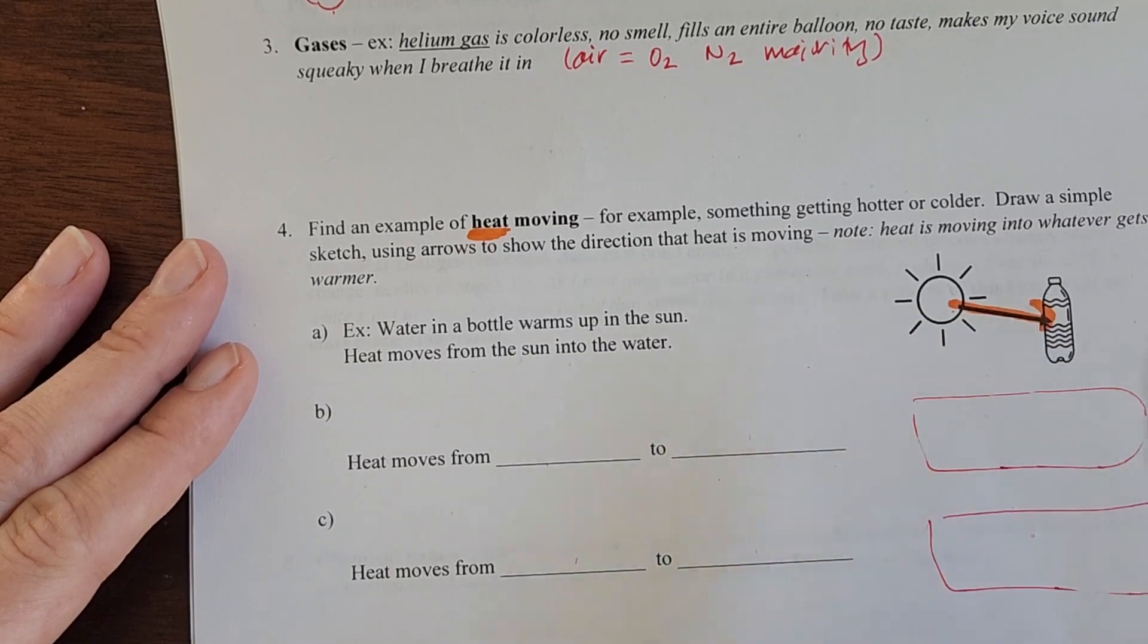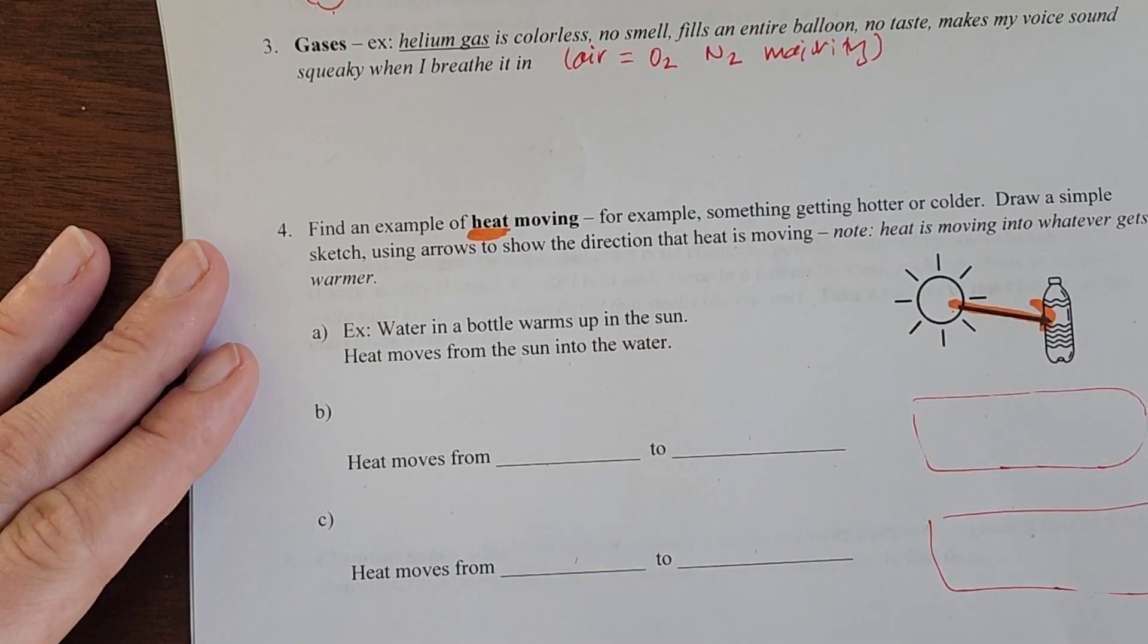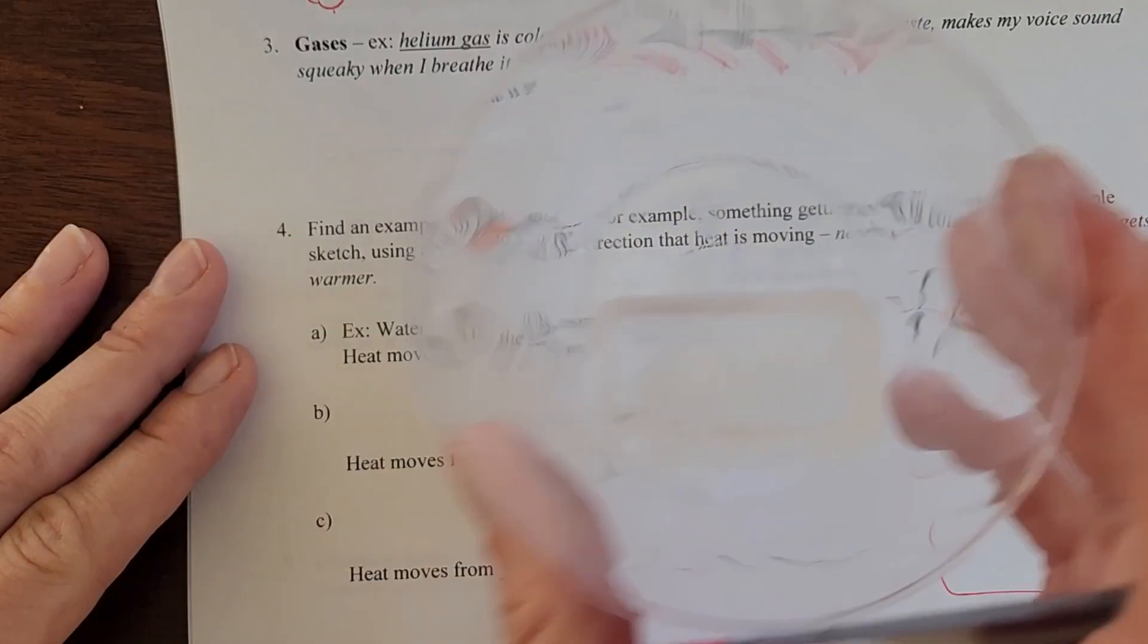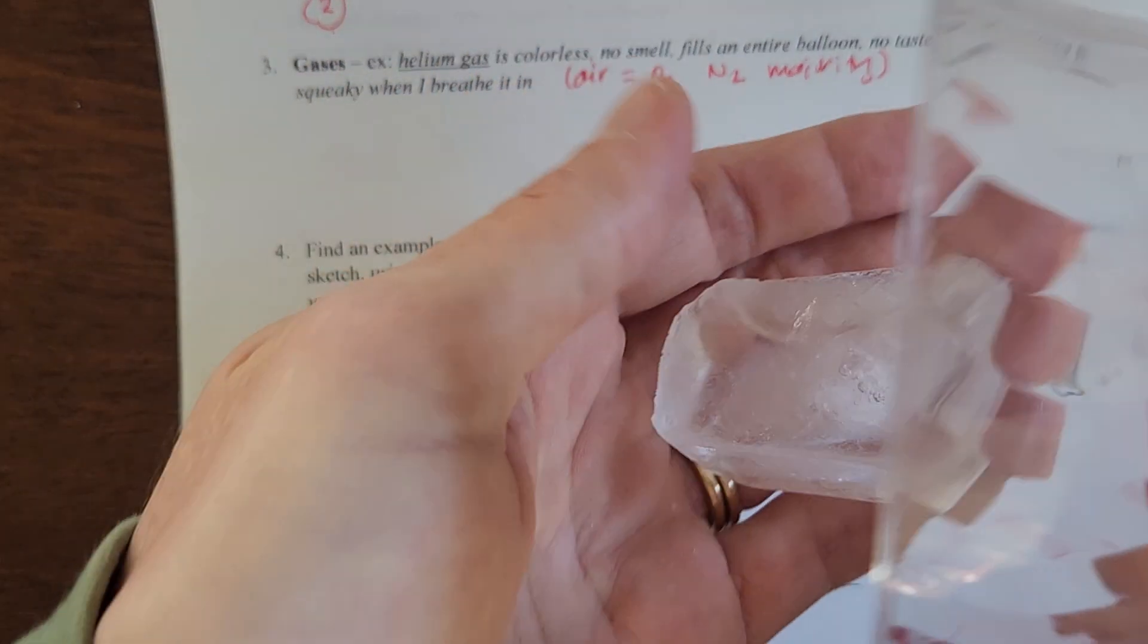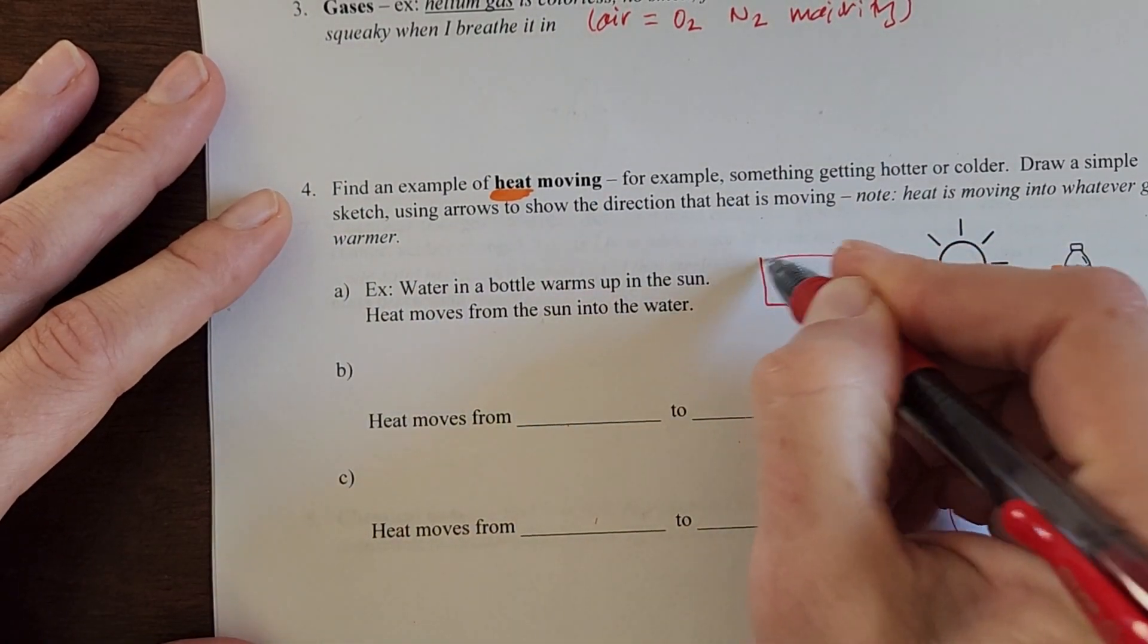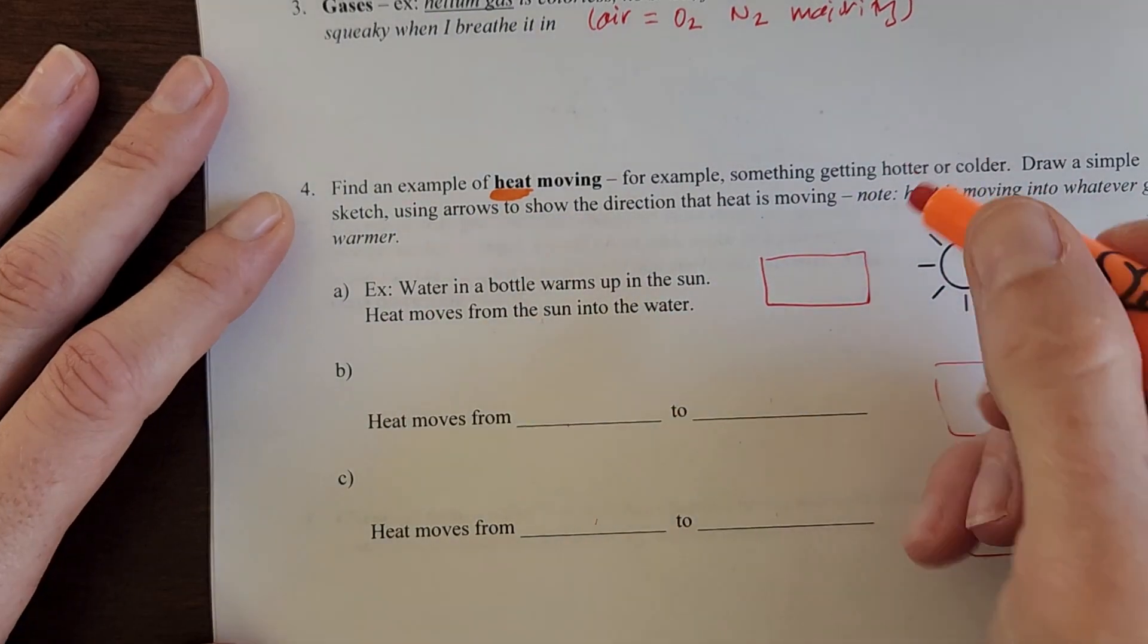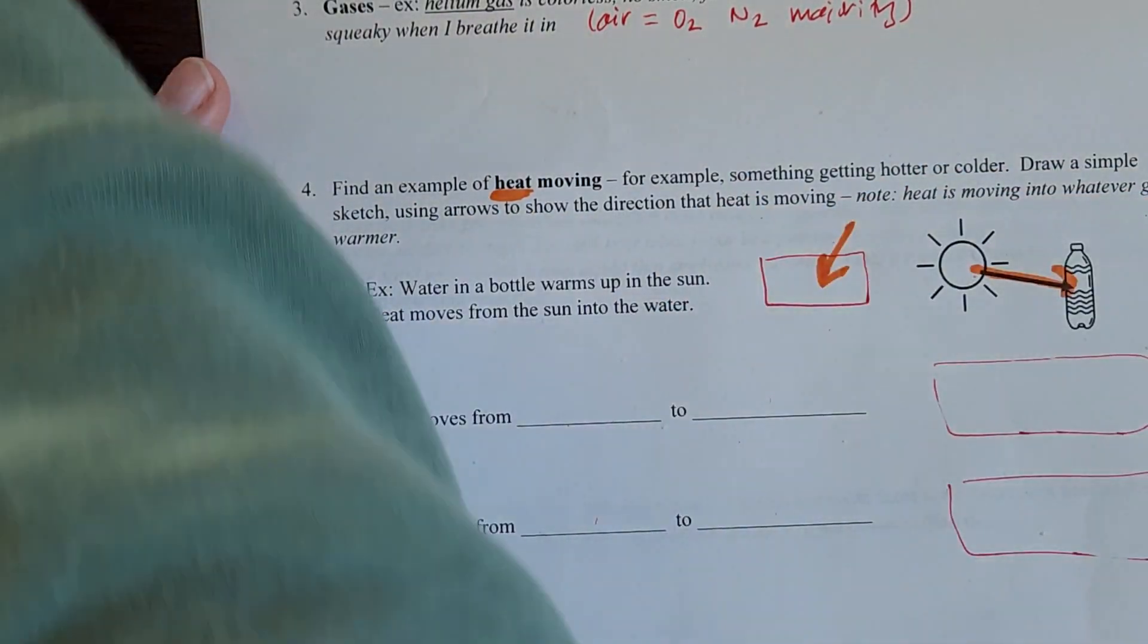Think about filling these in and don't forget to give a couple sketches that include those arrows that show where heat is moving. In contrast, if I have something like an ice cube and I feel that and I say, oh that feels cold, that ice cube feels cold because it's sucking heat in from the surroundings.